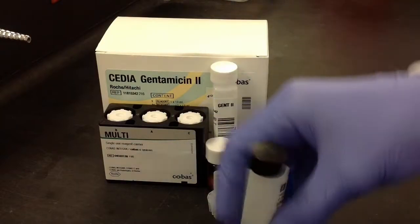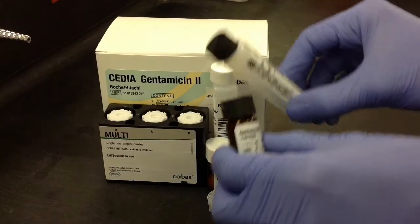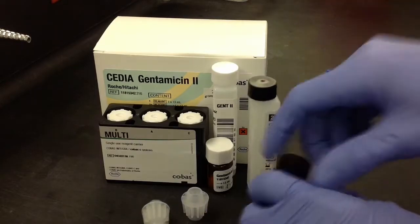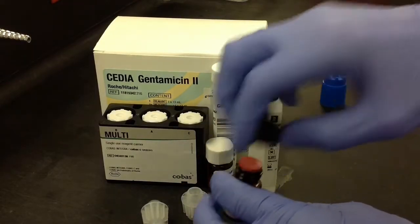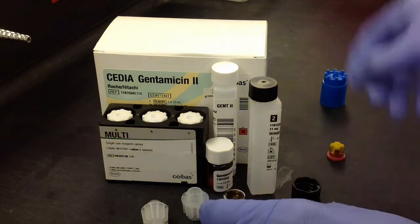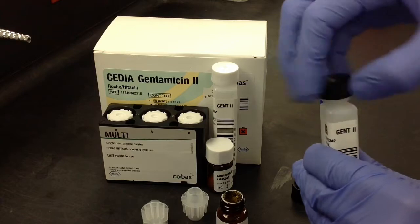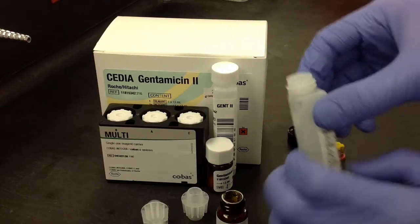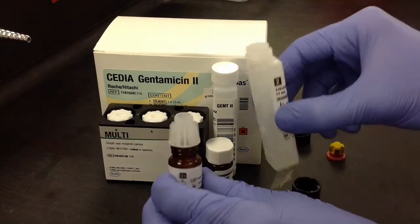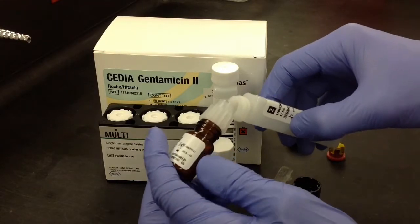The first thing you have to do is take the gentamicin, the corresponding cap colors. You're going to go ahead and mix these two reagents. One is lyophilized and one is a liquid reagent. Roche, in the instructions, recommends that after you mix these, you just separate it back into the number two bottle where the liquid originally came from.